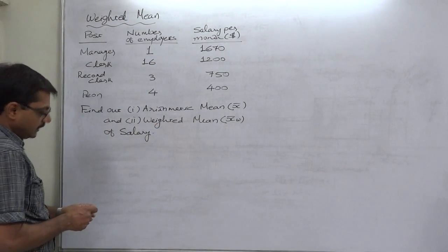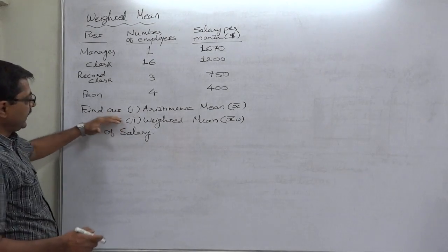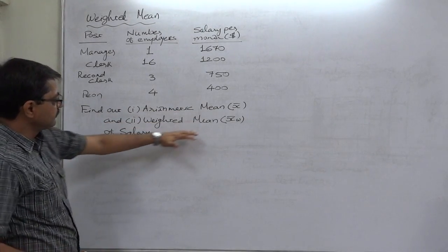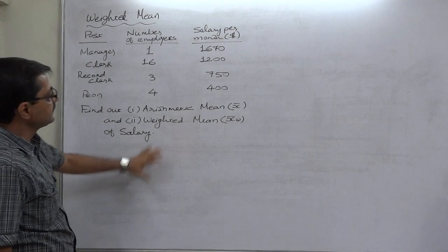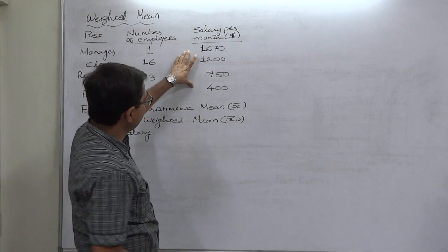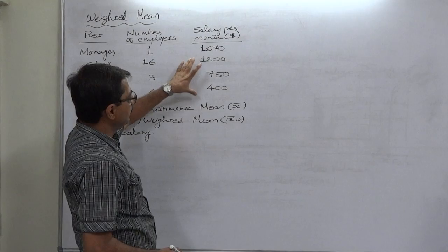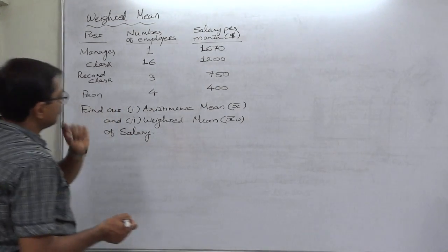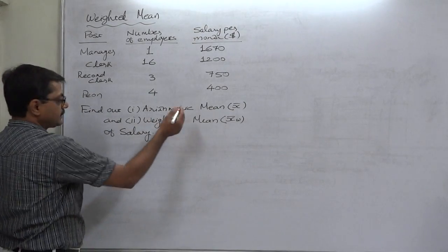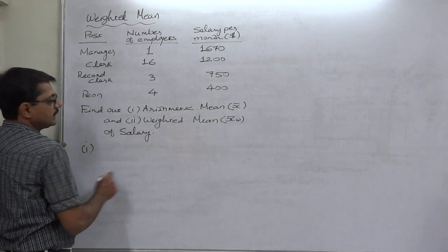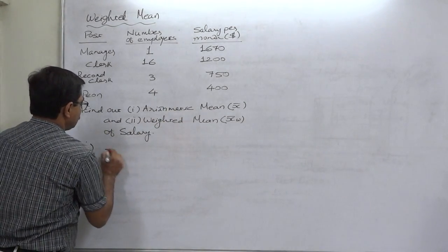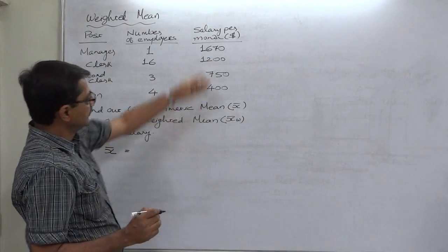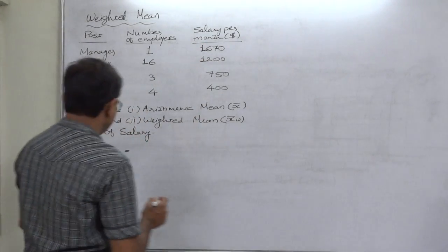We need to find out arithmetic mean as well as weighted mean of salary. That means salary is the variable for us. To calculate mean for salary, first we have to find out the sum total of salary. Let us get the sum total of salary, or say Sigma X.